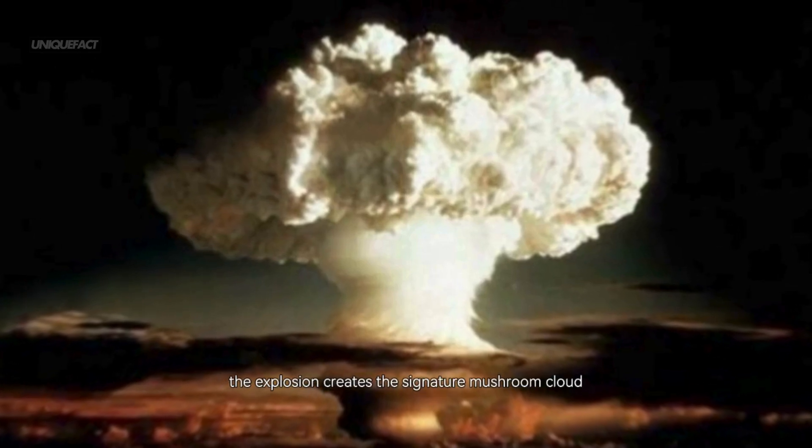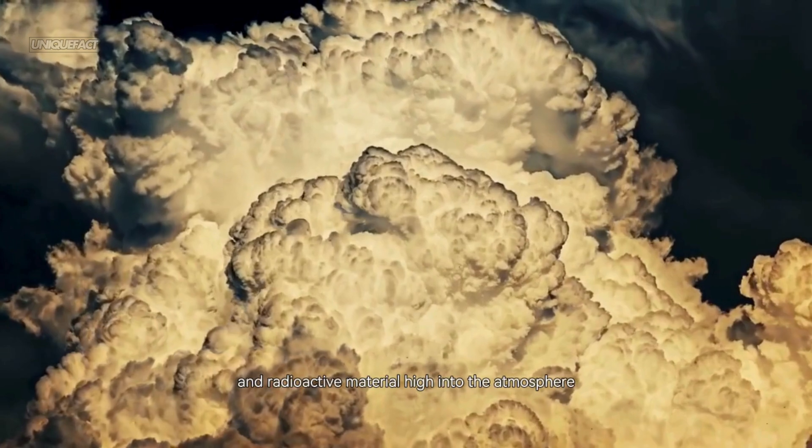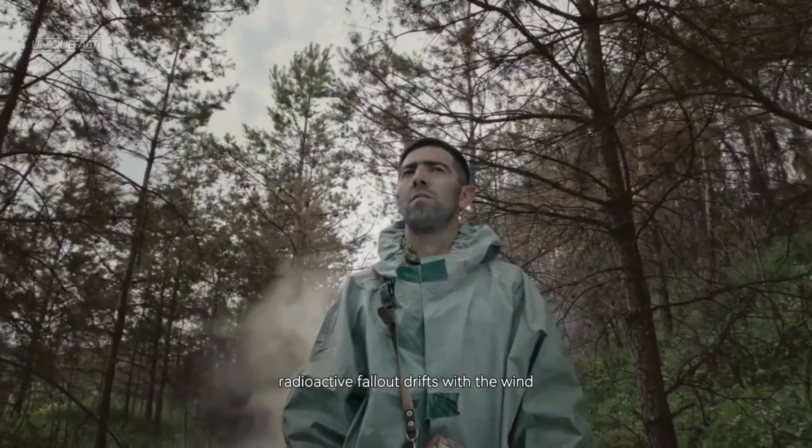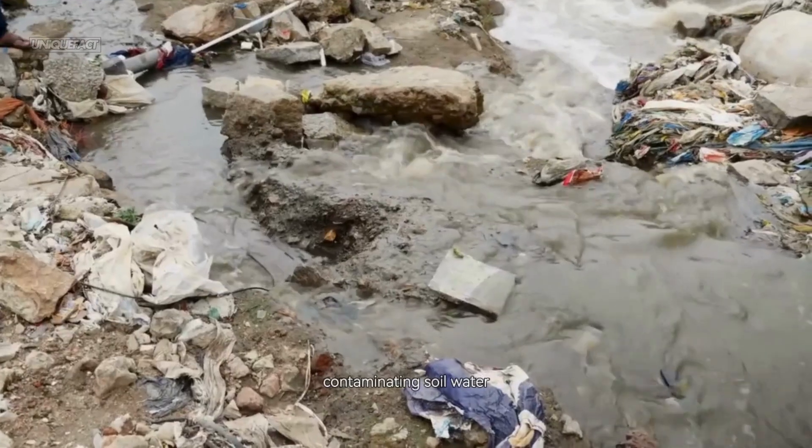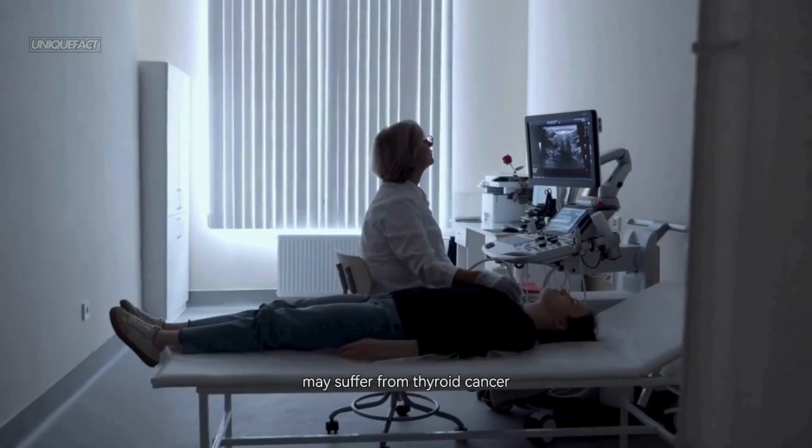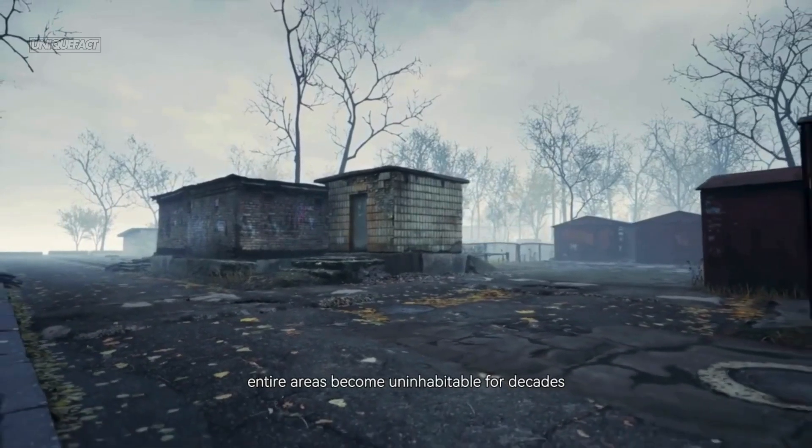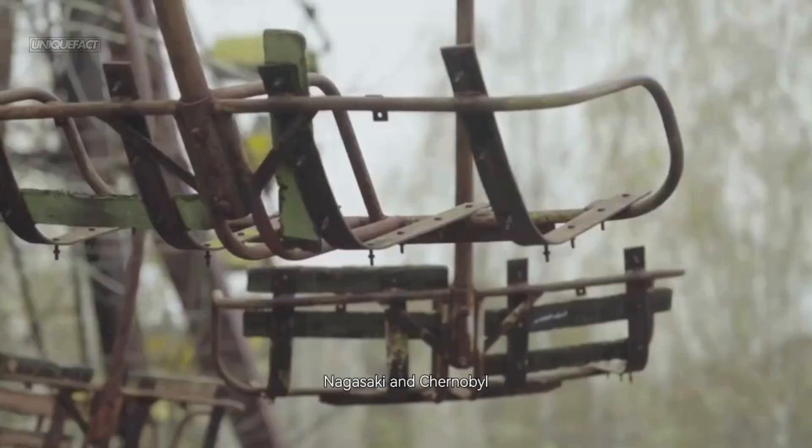The explosion creates the signature mushroom cloud, pulling dust, debris, and radioactive material high into the atmosphere. But what goes up must come down. Radioactive fallout drifts with the wind, sometimes for hundreds of kilometers, contaminating soil, water, food, and air. Even people far from the blast may suffer from thyroid cancer, birth defects, long-term ecological poisoning. Entire areas become uninhabitable for decades, like the fallout zones of Hiroshima, Nagasaki, and Chernobyl.